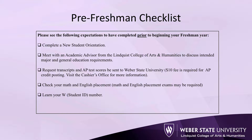It is important that you request your transcripts and AP test scores be sent to Weber State University. A $10 fee is required for AP credit posting. Visit the cashier's office for more information. You will also need to check your math and English placement, as math and English placement exams may be required. Last, it is important that you learn and memorize your student ID number, also known as your W number.